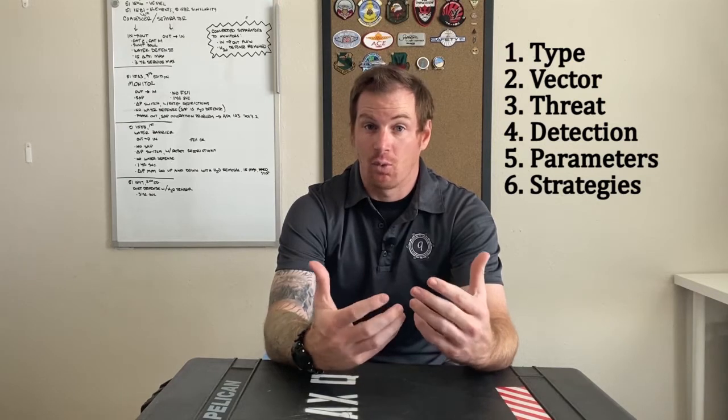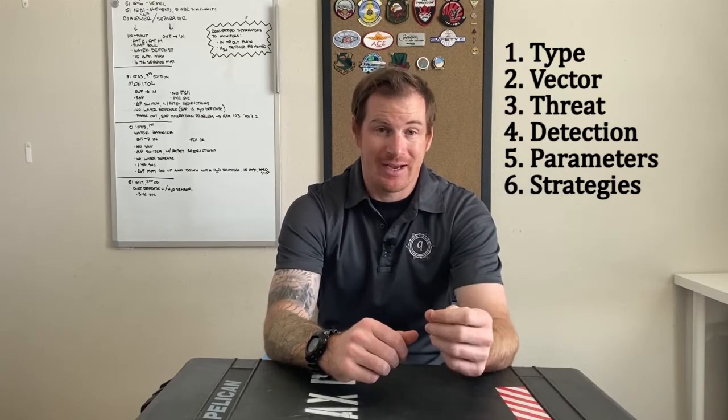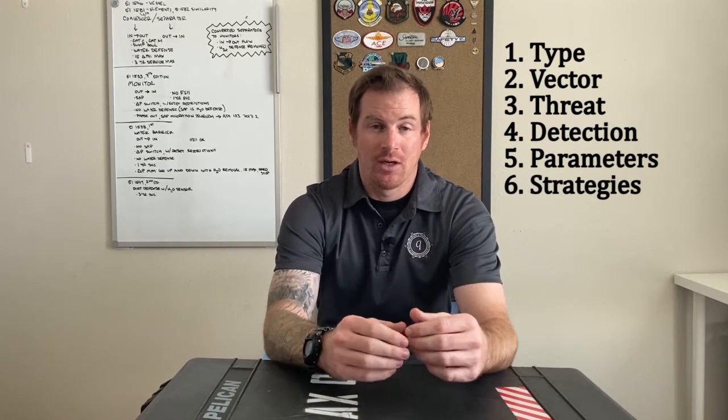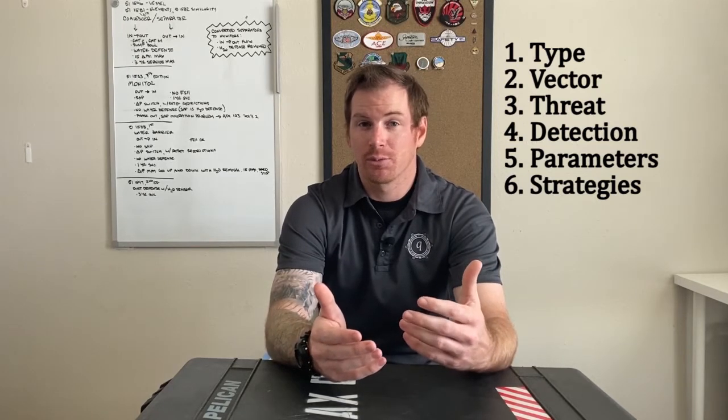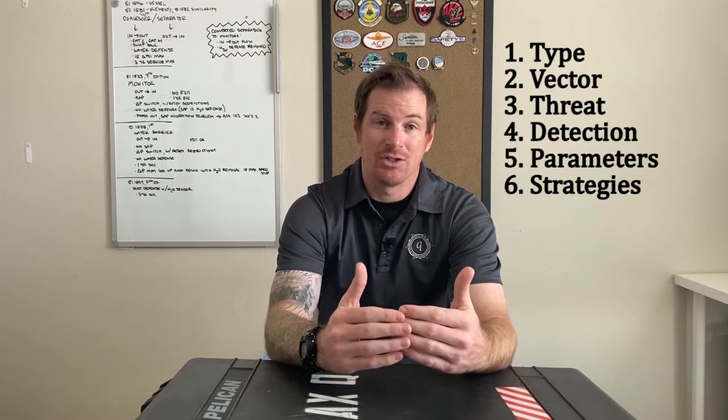For each form of contamination, I'm going to cover six points. Number one is the type, or what do we call it. Number two is the vector — where does it come from? Number three is the threat — why is it bad? Four is detection: where in the system are we going to be looking for it and at what frequency? Number five is parameters; there may be some acceptable limits. And number six is strategies: how do we fight it daily, and what do we do when contamination crosses that threshold where it's no longer acceptable?